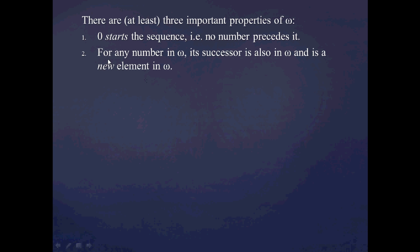Secondly, we had that for any number in omega, its successor is also in omega, and it's a new element in omega. What I mean by that is that when you take the successor of a number, let's say 5, you get a new element, namely 6. What you don't get is something like the successor of 5 being 2. So every time you take the successor of one of those higher numbers, like 10, you get a new set — you don't go back to a lower set like 2 or something like that.